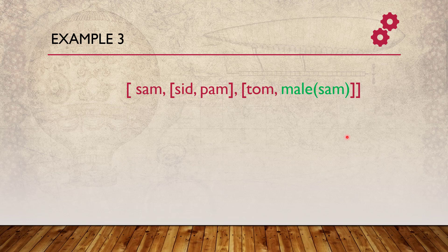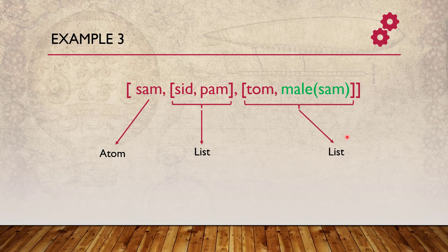Let us take another example: a list within a list. Here, Sam is an atom, [Seed, Pam] is a list, and [Tom, male(Sam)] is also a list. The outer main list contains three elements: one atom and two inner lists. This is also a valid scenario for a Prolog list. The length of the outer list is 3, while each inner list has a length of 2.